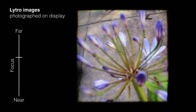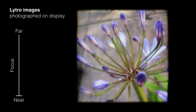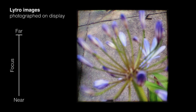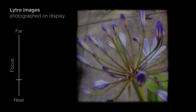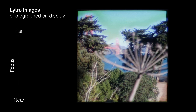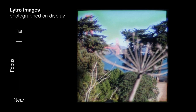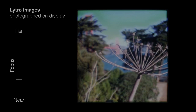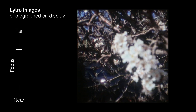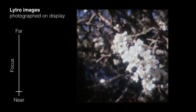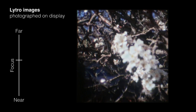Lightfields can also be used as input to our algorithm. As a proof of concept, we use imagery from a LITRO lightfield camera as input. To compensate for the limited angular resolution of the camera, we use an artificially large aperture for these sequences. In the future, the resolution of lightfield cameras will increase, making it possible to use their images without modification. This in turn will make it possible to acquire and display high-quality imagery of real-world scenes with accurate accommodation cues.